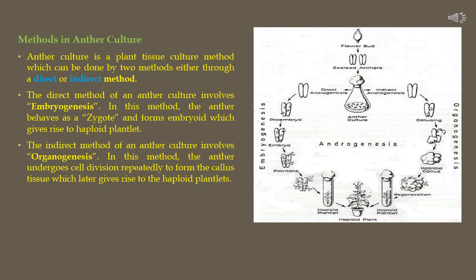Next, we will move to the methods of anther culture. There are two types: direct and indirect — the same two methods as discussed for tissue culture in previous videos. The direct method involves embryogenesis, where the anther behaves as a zygote and forms an embryo, giving rise to haploid plantlets. The indirect method involves organogenesis, where the anther undergoes repeated cell division to form callus tissue, which later gives rise to haploid plantlets.